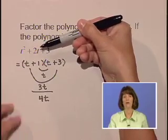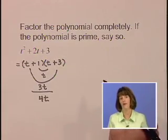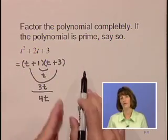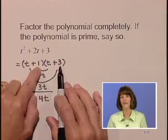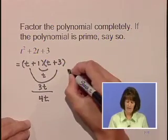We notice that doesn't match our original polynomial, and this was our only option for factorization. t times t gives t². 3 is a prime number. Its only factors are 1 and 3. This was our only option for a correct factorization, and it did not work.